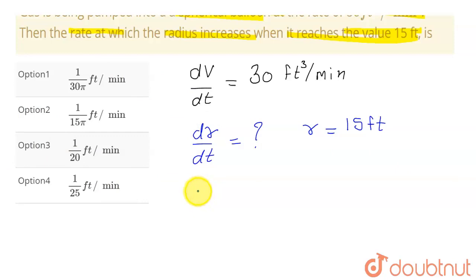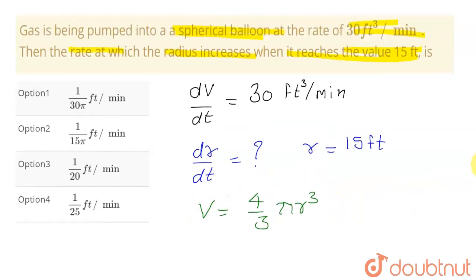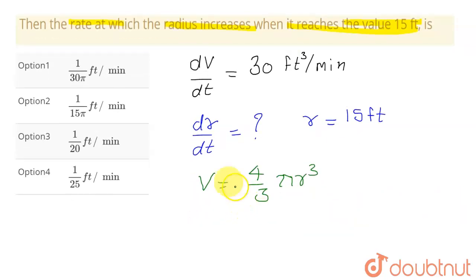For that, I can use the formula for the volume of a spherical balloon: V = (4/3)πr³. This is the formula for calculating the volume of a spherical balloon. Now, if I differentiate both sides with respect to time, I get the following.